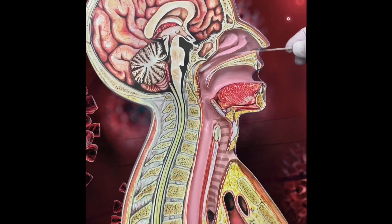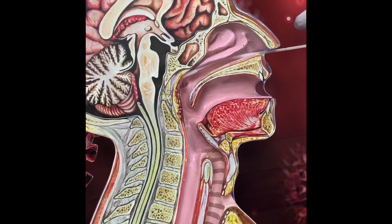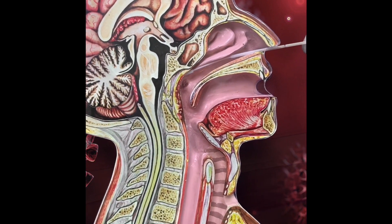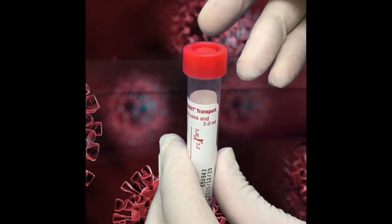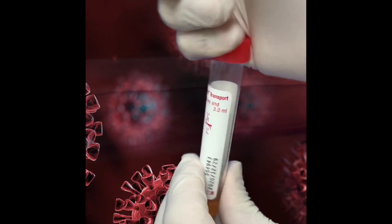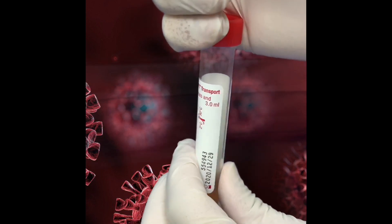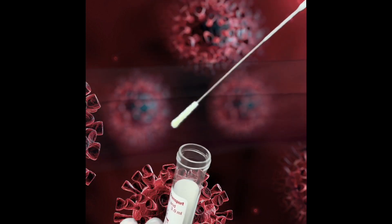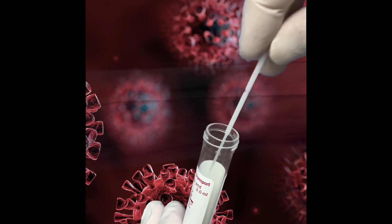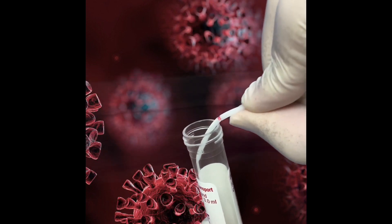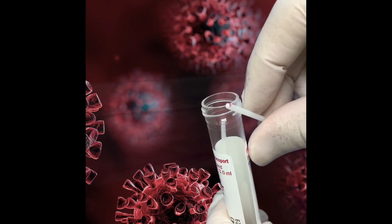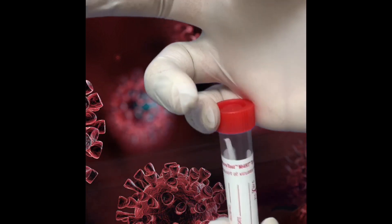I will go inside until I reach the nasopharyngeal, keep it to absorb more secretions, then rotate, then take it outside. Then we will put it in the virus media. In the sticks there is actually a broken area where you can break the stick, so opposite to my side I will break it, then I will cover the tube.